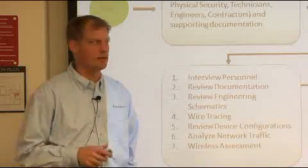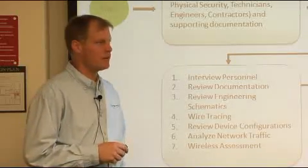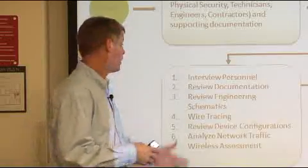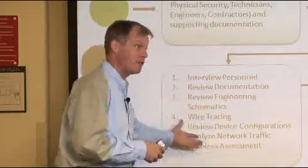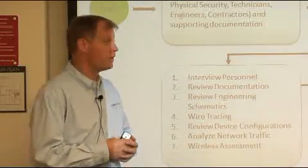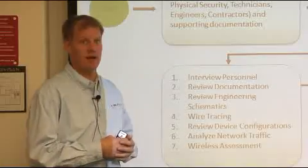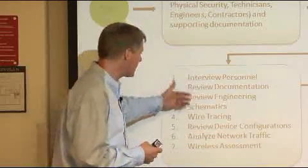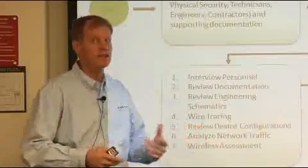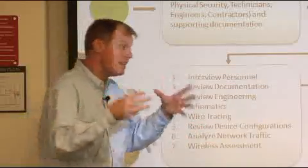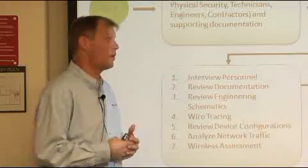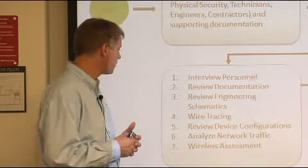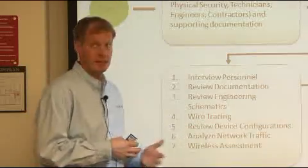If documentation isn't current, you have to find the deltas — figure out what's actually in that environment. That means interviewing personnel, reviewing documentation, looking at actual engineering schematics, getting an engineer into the process, and looking for physical, cyber, and operational security deficiencies, including wire tracing.